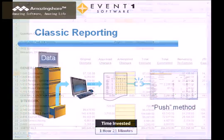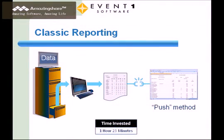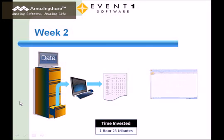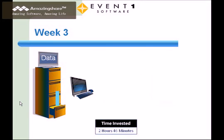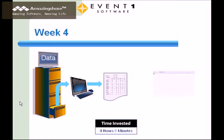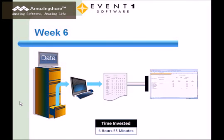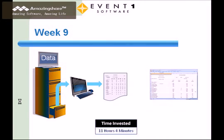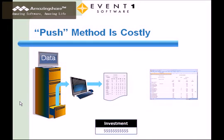Now for the big question: what happens when you need to produce the same report again for the next reporting cycle? You go back through the entire process again, starting with the first step where you produce the report or reports again from your application. You then put the report data into Excel, apply the formatting, the formulas, and other analysis features, and verify your work. Doing this each and every reporting cycle represents a significant investment, because of the amount of time spent over the course of weeks, months, and years.